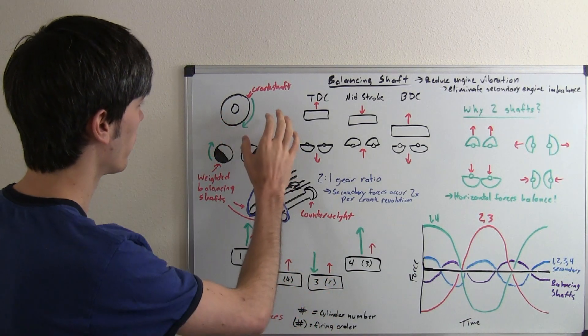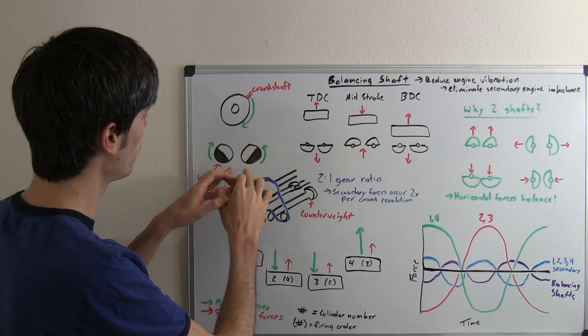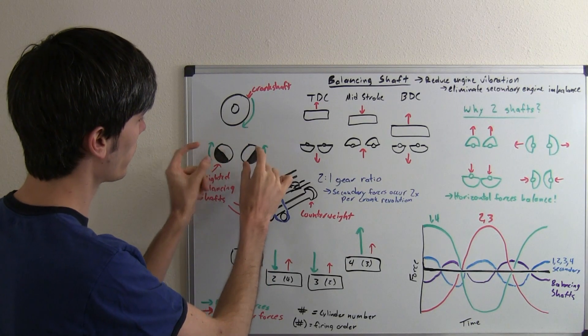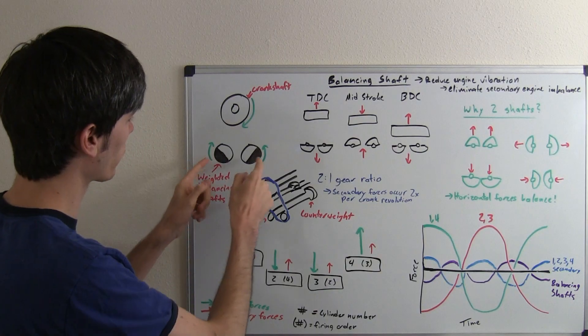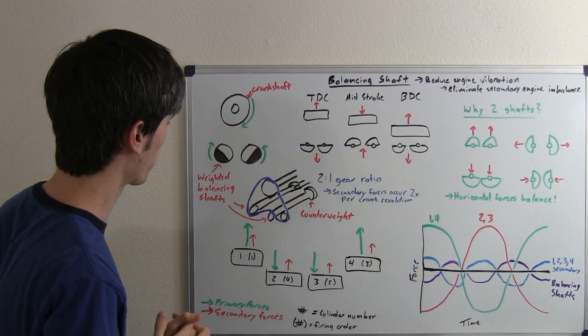What we've got going on is a crankshaft that's geared to two balancing shafts which have weights at one side. As these rotate, these weights have a force that's going out with the rotation.